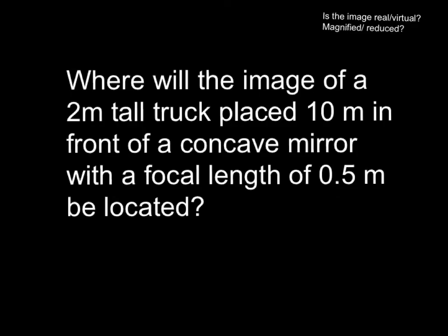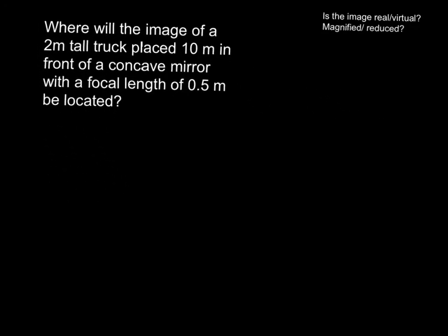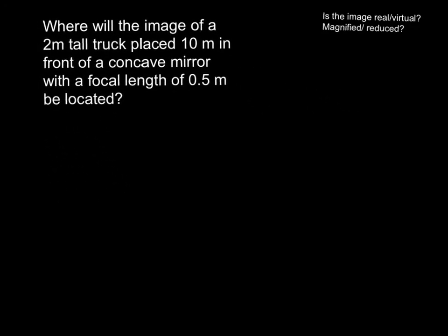So applying it to a problem, where will the image of a 2-meter tall truck placed 10 meters in front of a concave mirror with a focal length of 0.5 meters be located? So the focal length of our mirror is 0.5 meters. So we have 1 over our focal point is equal to 1 over DI plus 1 over DO.